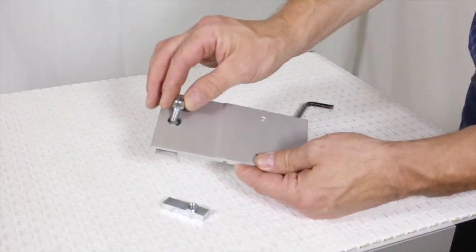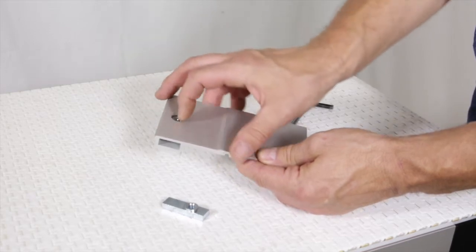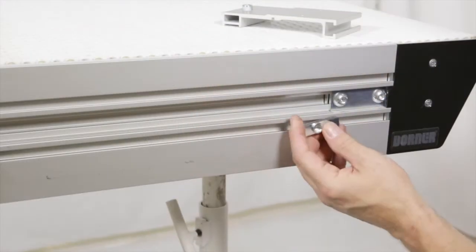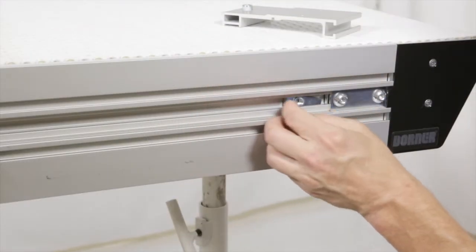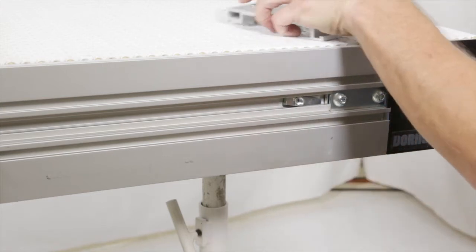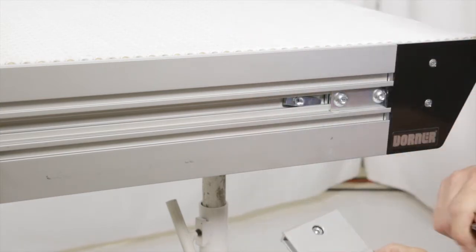Locate the stand brackets and place a screw into the bracket. Insert the nut into the conveyor side slot. Fasten the bracket to the conveyor with the mounting screw.